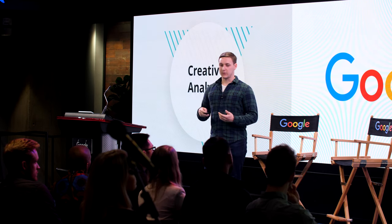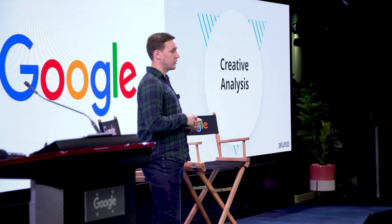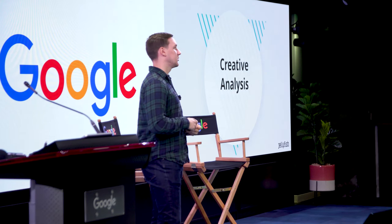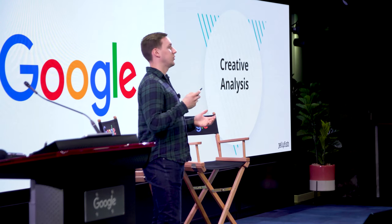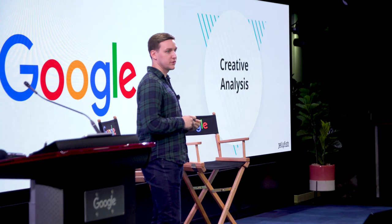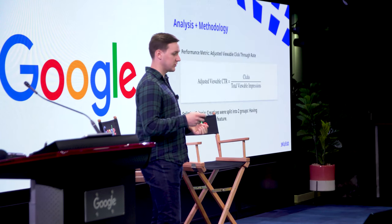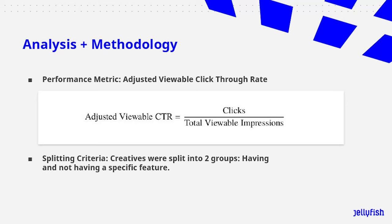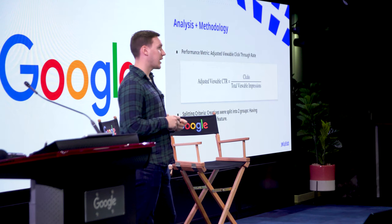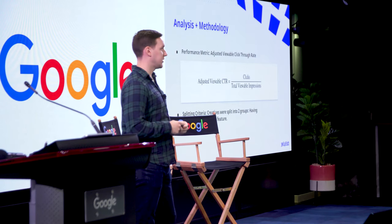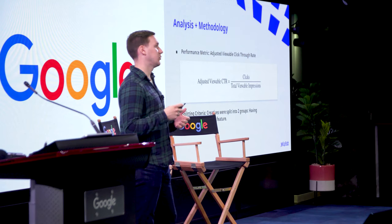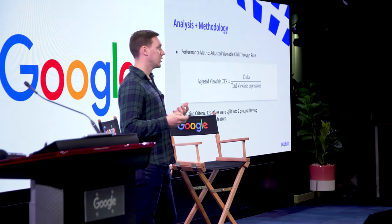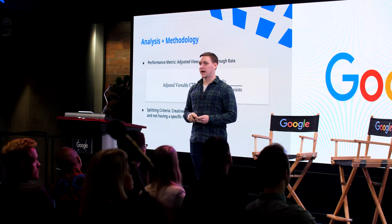Just to give an example of how we do this creative analysis — with every client we run this with, we do a portfolio-level analysis of all their creatives in Campaign Manager. We look at performance using an adjusted viewable click-through rate, which is essentially clicks over total viewable impressions. We then split the creatives into two groups — having and not having a specific feature — and run this across all of the different data that comes out of the Vision API. We're then able to bubble up the features that are indicative of a performance lift.